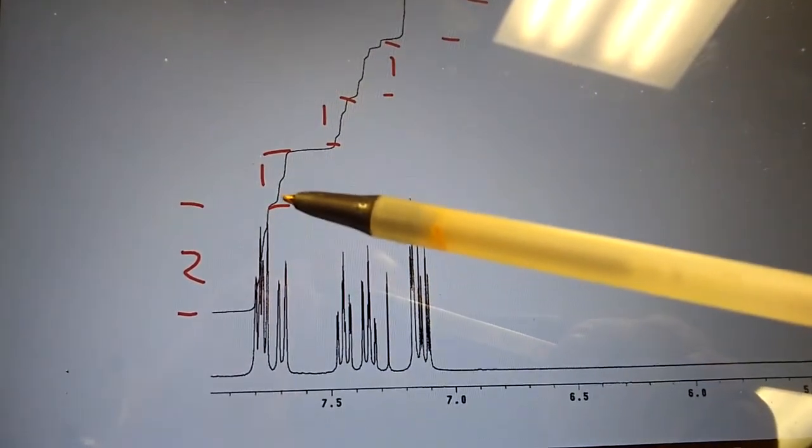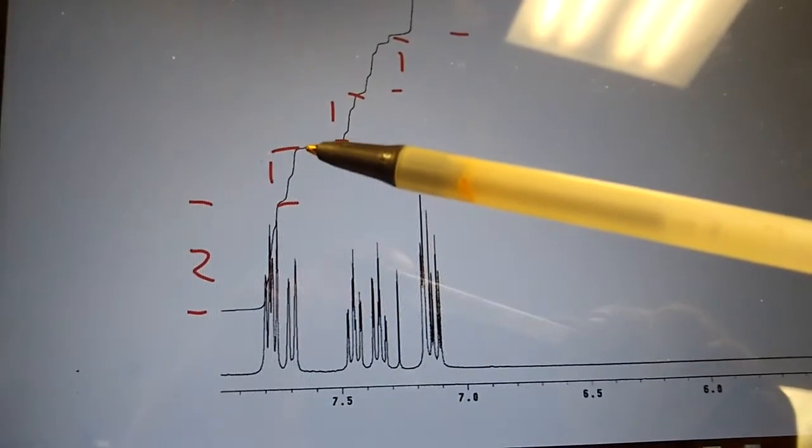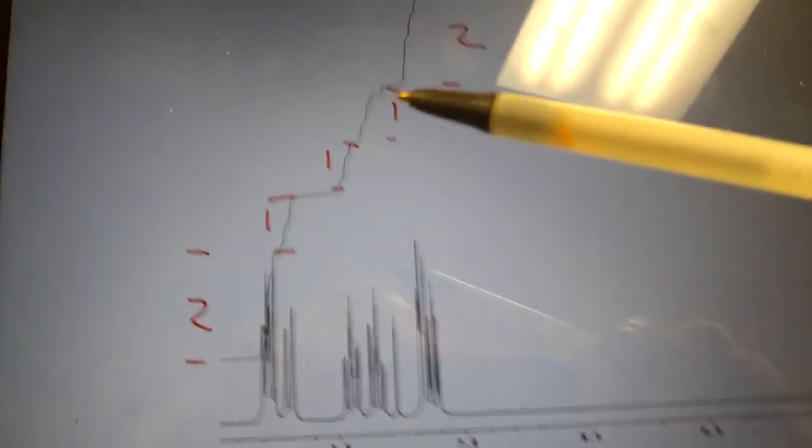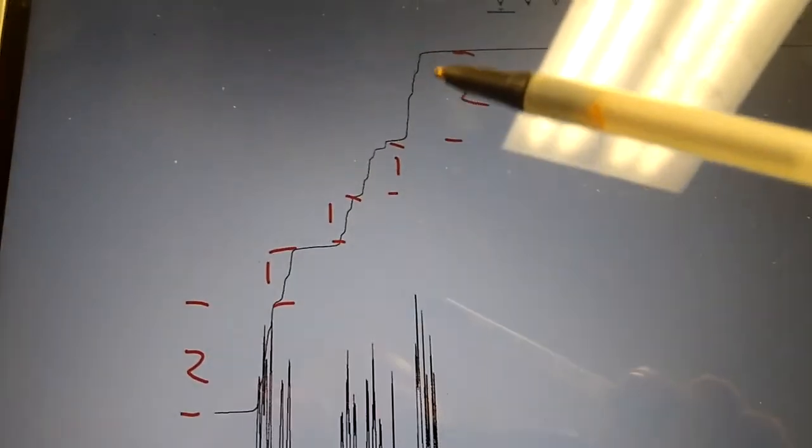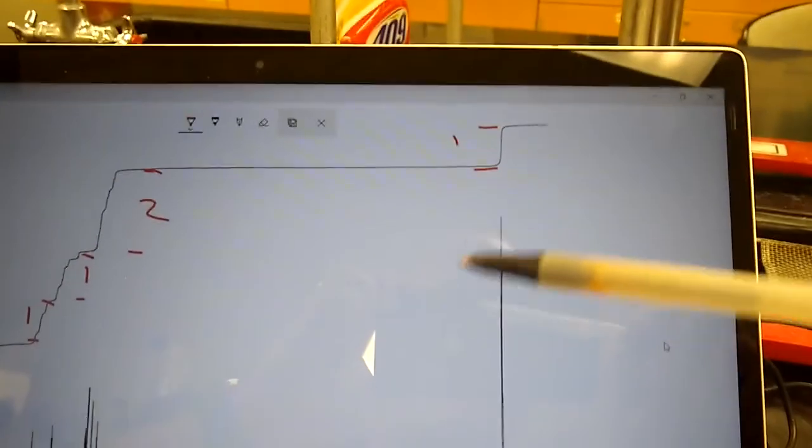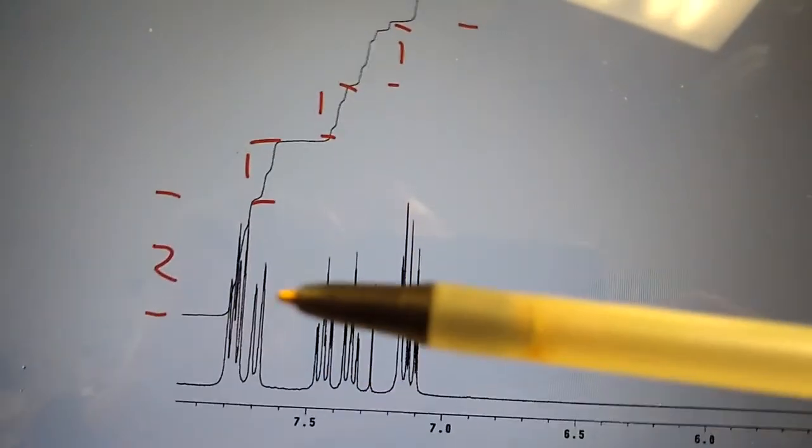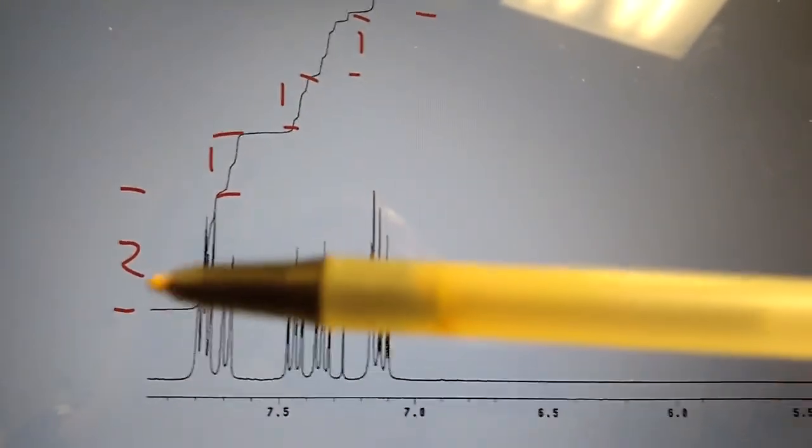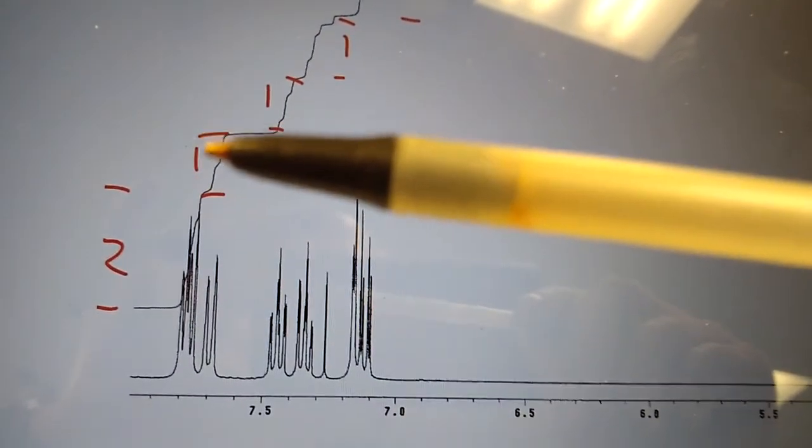You do that for each little stair step, and you've got one way down here that you can't see very well. If you compare the measurements for each stair step, you'll see that this one and this one are double the distance of these other ones.